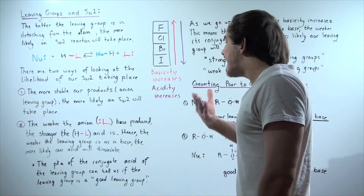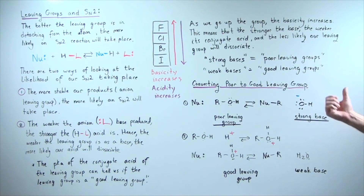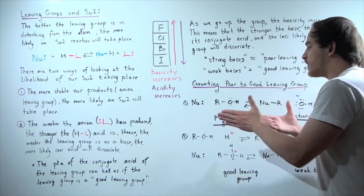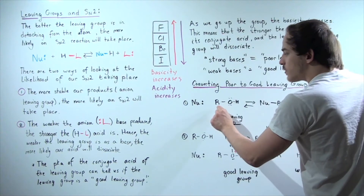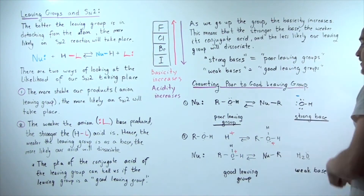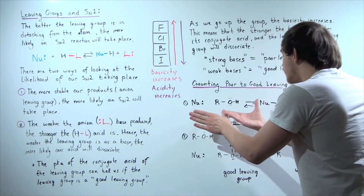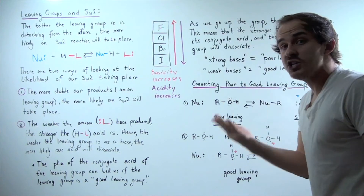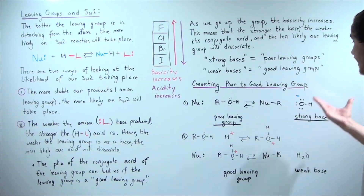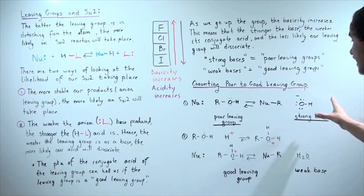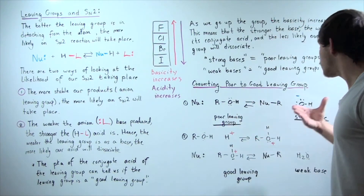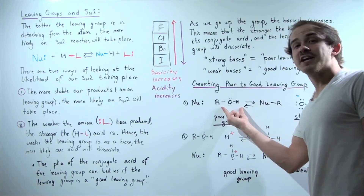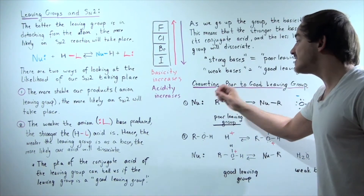Now suppose we have a very poor leaving group. Can we convert a poor leaving group to a good leaving group? Let's look at the following example: suppose we have a nucleophile that reacts with an alcohol molecule. If this undergoes an SN2 reaction, the nucleophile would form a bond with R, kicking off the hydroxide leaving group OH. However, this reaction does not actually take place because hydroxide is a very poor leaving group — it's a strong base, meaning its conjugate acid is a poor acid, and it is not very likely to dissociate. So this reaction will not take place via an SN2 fashion.